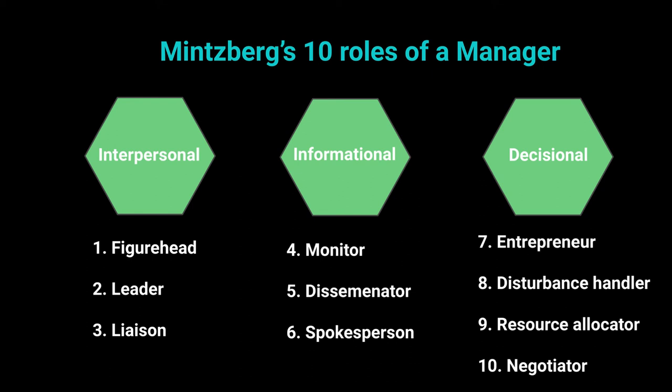The second decisional role is disturbance handler. Consider COVID — when the pandemic hit, it was a disturbance that put many businesses on the brink of closure, and many did close. Before reaching that point, the manager should take notice and find ways to counteract those threats. Similarly, if a competitor opens just down the street from you, that is a disturbance in your external environment, and unless you address it head-on it will hurt you in the long run. The disturbance handler keeps an eye on things that might negatively impact the business.